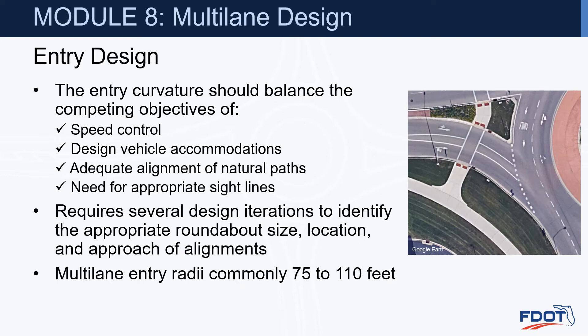Entry design. The entry curvature should balance the competing objectives of speed control, design vehicle accommodations, adequate alignment of natural paths, and the need to provide appropriate sight lines. This may require several design iterations to identify the appropriate roundabout size, location, and approach alignments. Multilane entry radii are commonly in the 75 to 110-foot range.